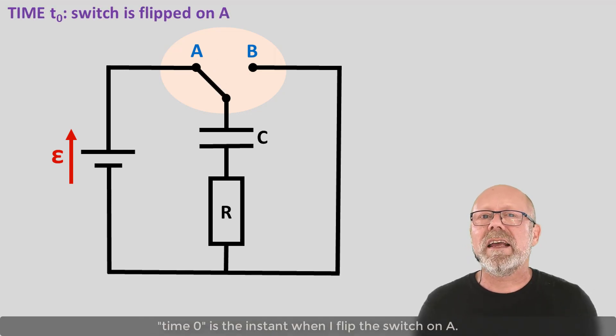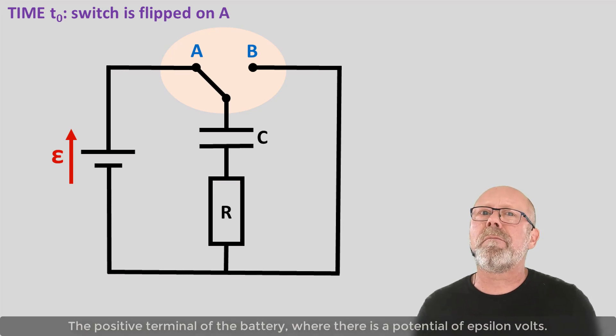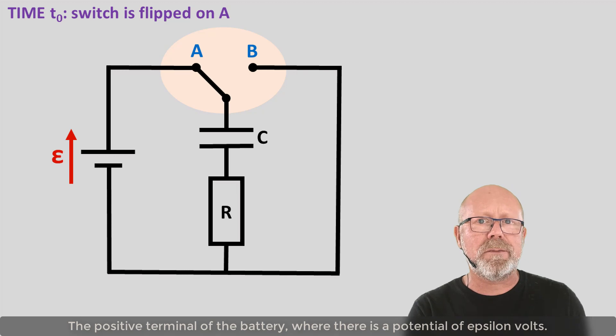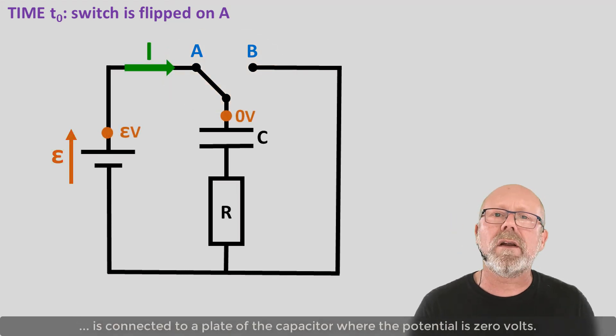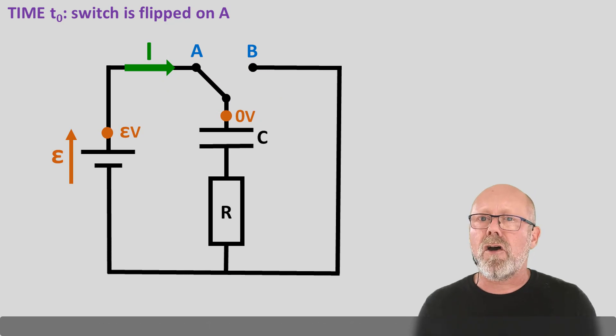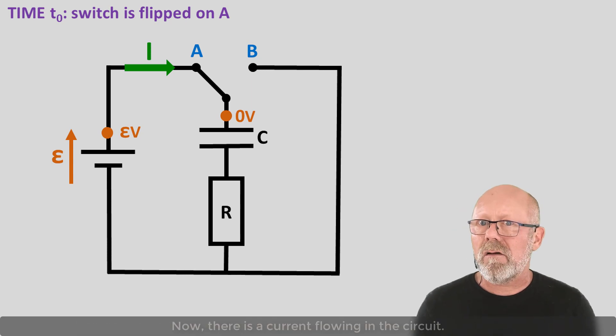Time 0 is the instant when I flip the switch on A. The positive terminal of the battery, where there is a potential of epsilon volts, is connected to a plate of the capacitor where the potential is 0 volts. The circuit is now out of balance. Charges begin to flow from the battery towards the capacitor's upper plate. Now, there is a current flowing in the circuit.